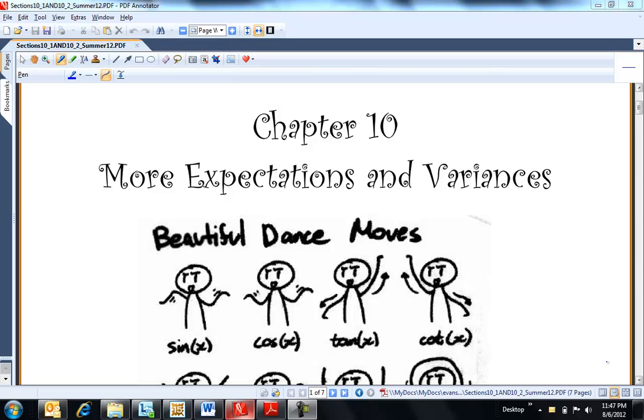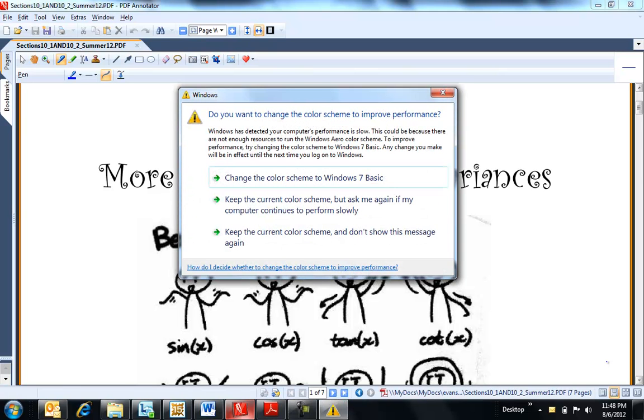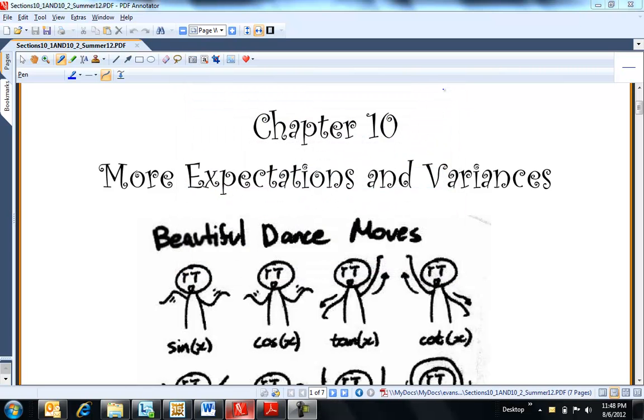And then 10.2 is new. It's on covariance, which is the variance between two random variables. So, I don't know, it's kind of nice, just a follow-up. I always put 11 first because I feel like in Chapter 11 you need to see moment generating functions to be able to understand how to sum random variables. So, that to me is more important than 10 and I'm kind of going backwards to catch 10 now.